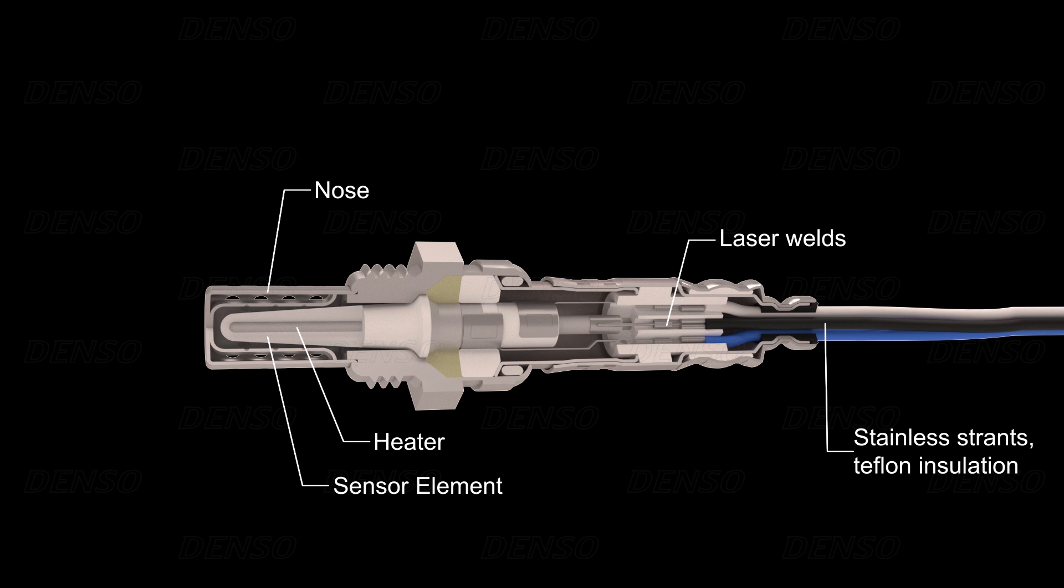At the rear of the sensor is a ventilation membrane. The membrane allows outside air to flow through to the internal side of the sensing element. The other side of the sensing element is exposed to the exhaust gas, which has a very low oxygen content because most of the oxygen has been burnt during combustion.